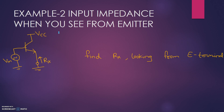Coming to the next example: suppose we want to find the input resistance seen from the emitter terminal. Here there is an input voltage, but we are not concerned with the input resistance from that side — we want to find the resistance seen from the emitter terminal. So let us try to solve it.